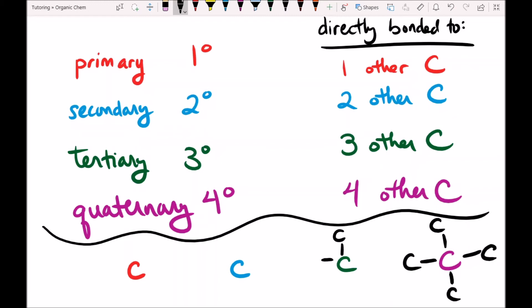Our tertiary carbon is bonded to three other carbons and it has one other bond that's bonded to something else. In this case let's say hydrogen.